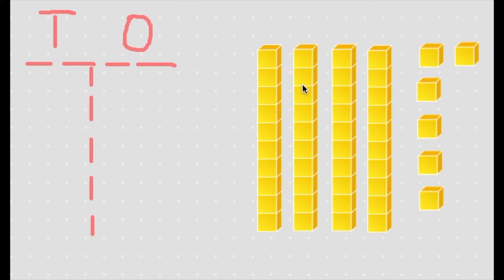10, 20, 30, 40, and then when we get to our cubes we start counting by ones. 41, 42, 43, 44, 45, 46. So these longs and cubes represent the number 46.